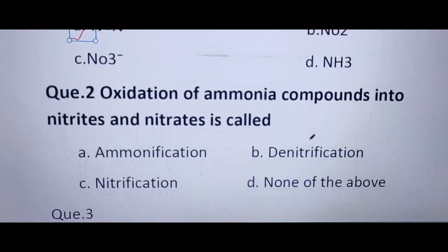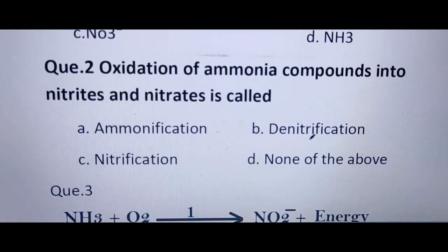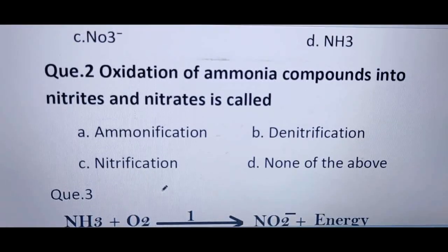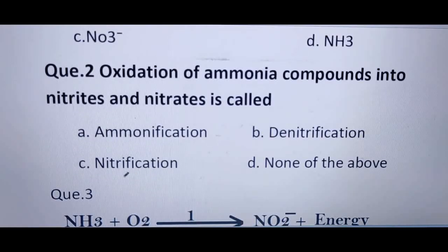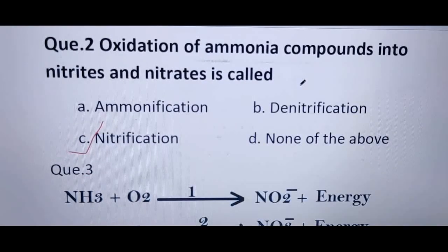Second question: oxidation of ammonia compounds into nitrites and nitrates is called? The options are ammonification, denitrification, nitrification, and none of the above. Ammonification is the formation of ammonia from other nitrogenous compounds. In denitrification, usable forms of nitrogen are converted back into molecular nitrogen. In nitrification, ammonia is converted into nitrates and nitrites. So the correct answer is C — nitrification.